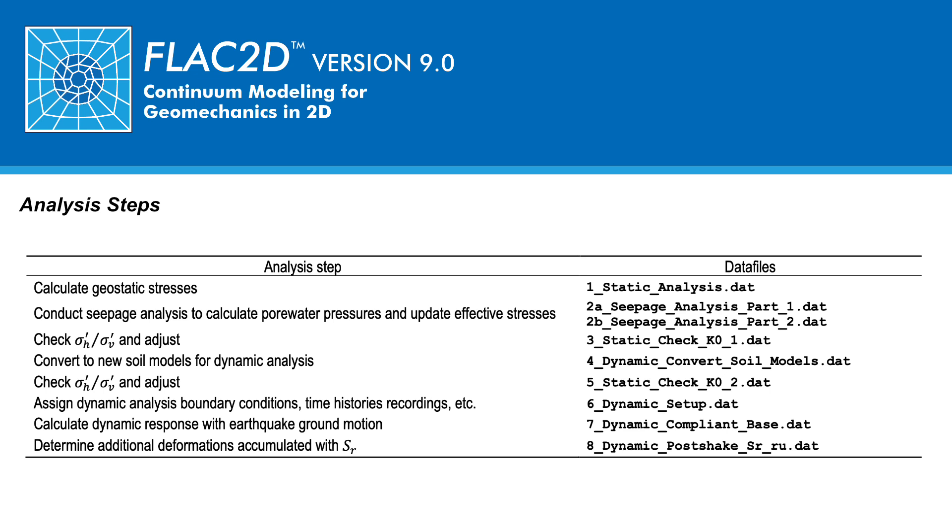First, in the fourth analysis step, the constitutive models are changed from elastic to UBC-hist in the embankment and from elastic to the PM4 sand model in the alluvium. The mechanical equilibrium of the model is determined again.